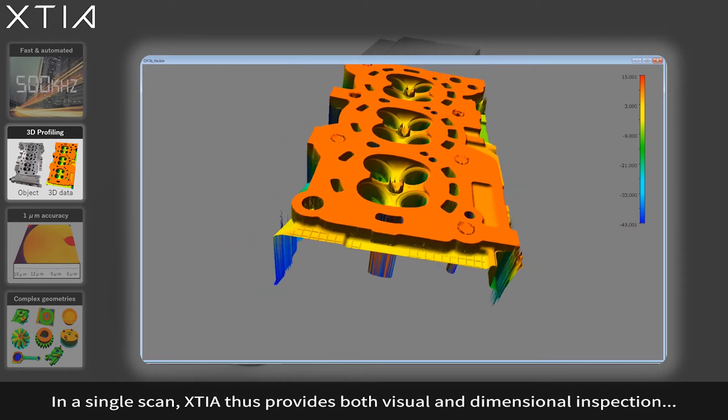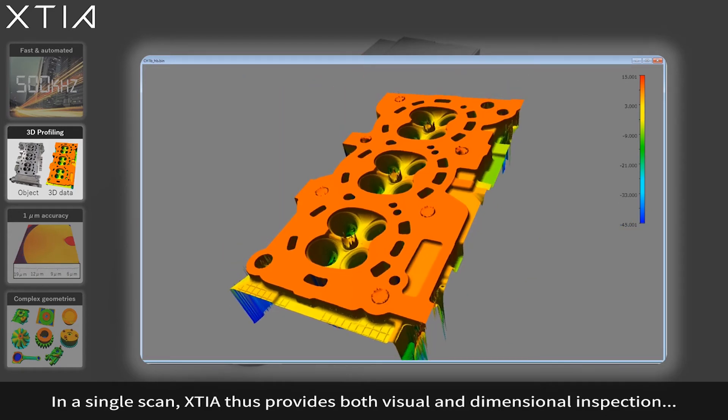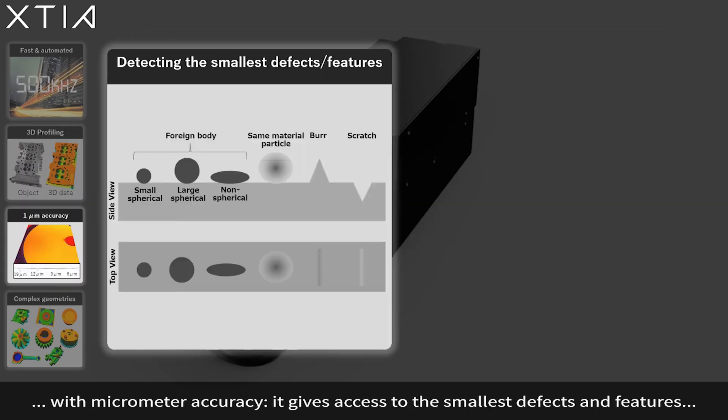In a single scan, XTIA thus provides both visual and dimensional inspection with micrometer accuracy.